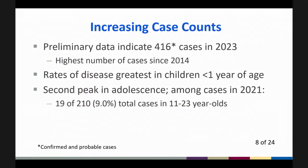Preliminary data reveal 416 cases of invasive meningococcal disease in 2023, which is the highest number of cases since 2014. The rates of disease are greatest in children younger than one year of age, and there is a second peak in adolescence. When considering the 2021 cases, 19 of the 210 cases — or 9% — were among 11 through 23-year-olds.